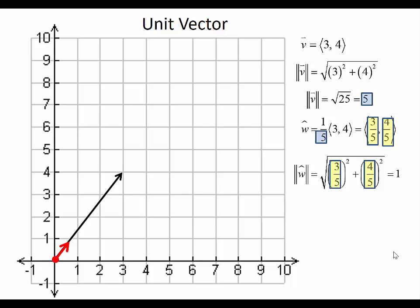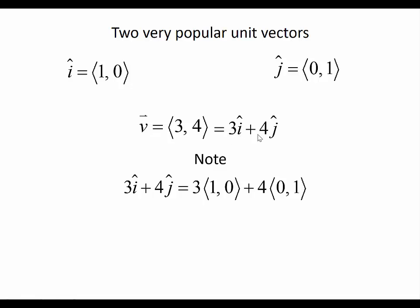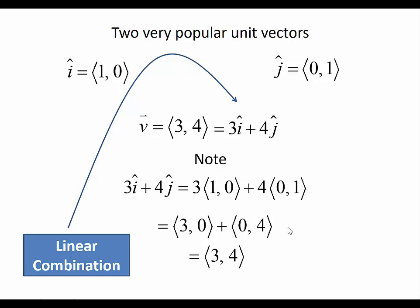Now let's think about two very popular unit vectors: i and j. The i vector points along the x-axis to the point 1, 0; the j vector points along the y-axis to 0, 1. Our vector v, which is 3, 4, can be rewritten as 3 times i plus 4 times j. If you expand 3i plus 4j, you get 3, 4 — the same thing. We call this a linear combination, and it's another way to write a vector using these unit vectors.